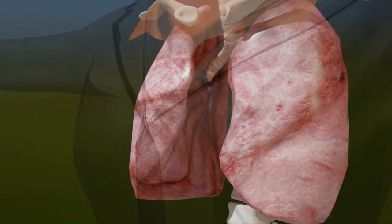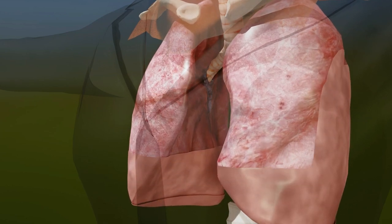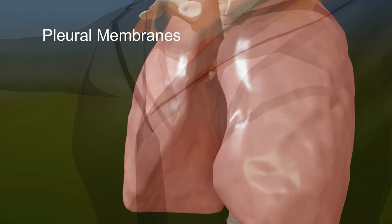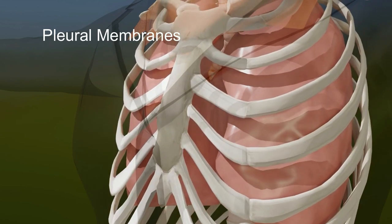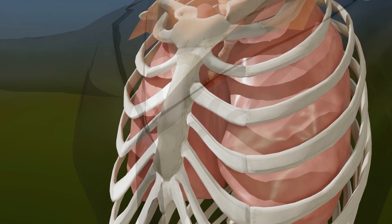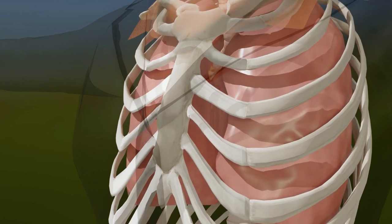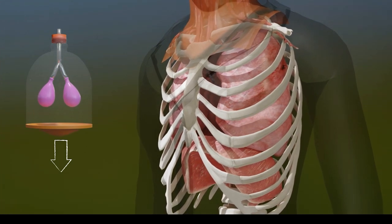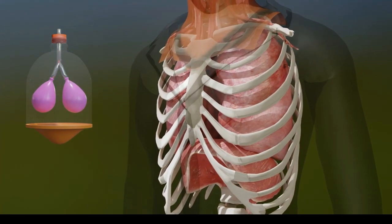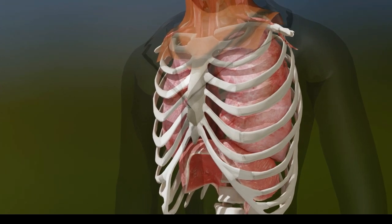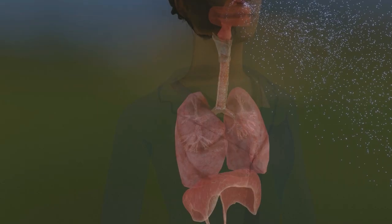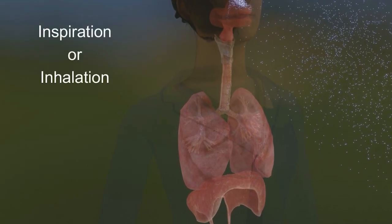Our two lungs are stretchy and attached to the inside of our ribs, diaphragm and mediastinum, by the pleural membranes. These moist pleural membranes are fixed to the inside of our ribcage, surround the surface of each lung and slide against each other. As our diaphragm moves down and our ribs move up and out, the pleura move with them and our lungs are pulled open and expand. Therefore, as our chest volume increases, our lung volume increases and air is sucked in. This is inspiration or inhalation.